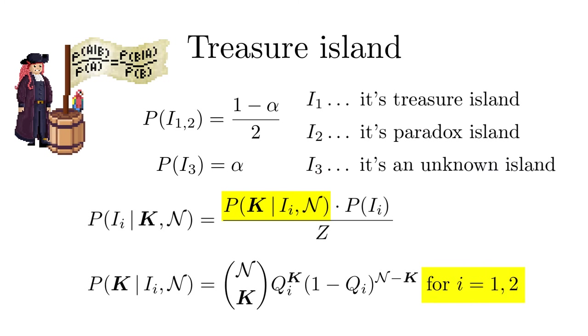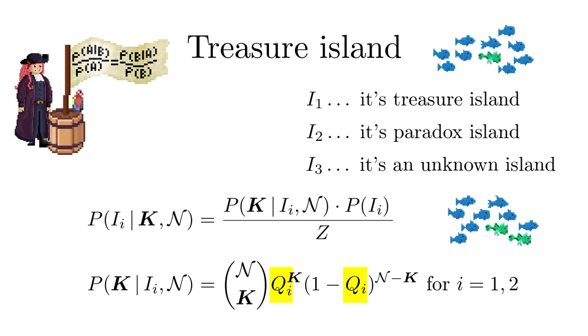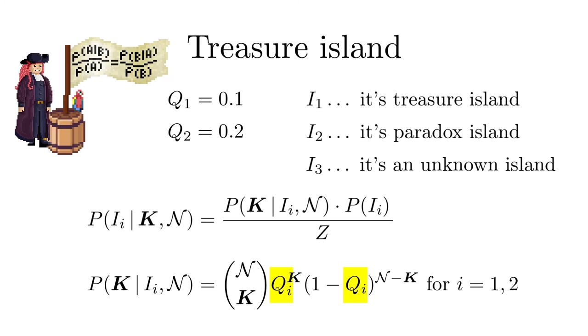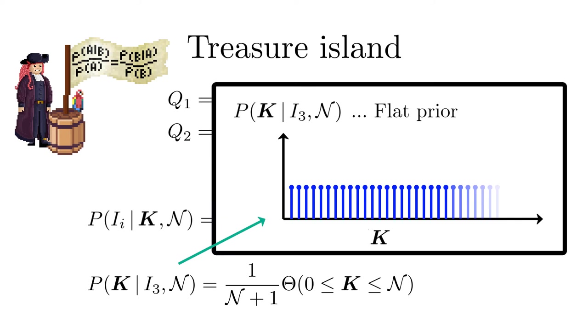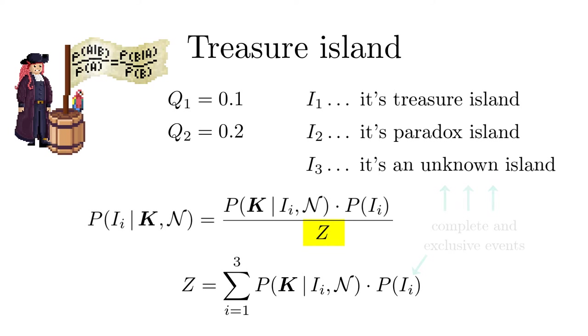Then the likelihood for the two known islands is binomial, where q sub I is the corresponding frogfish ratio, q equal to 0.1 for treasure island and q equal to 0.2 for paradox island. The remaining unknown probability is the likelihood for the third island. If the island is unknown, then the frogfish ratio is also unknown, and thus this probability is independent of k. Finally, the normalization has the form given before, for complete and exclusive events.